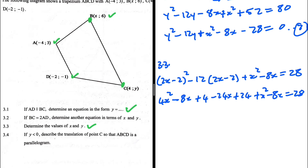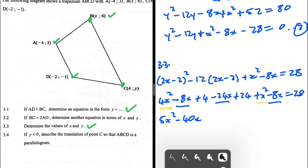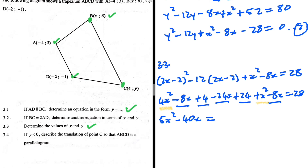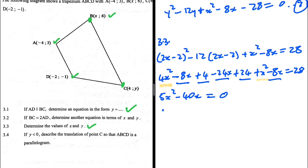Collecting like terms: 4x² + x² = 5x². For the x-terms: −8x − 24x − 8x = −40x. Constants: 4 + 24 move to the right side, giving 28 − 4 − 24 = 0. So we have 5x² − 40x = 0. Taking x as a common factor: x(5x − 40) = 0.